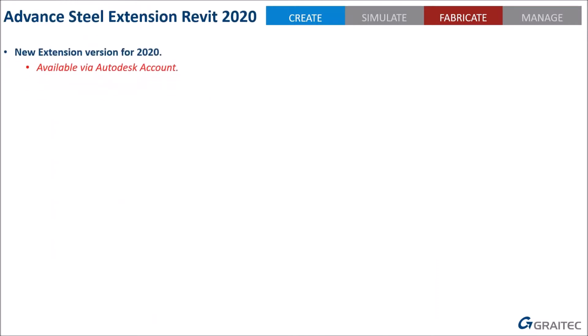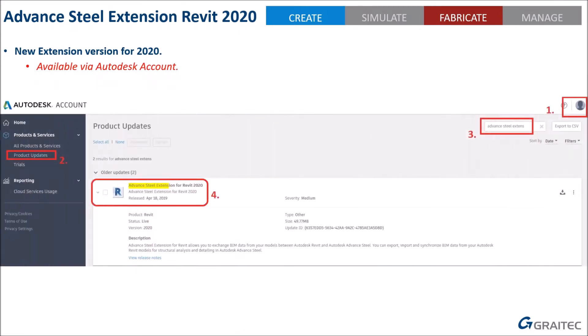In the 2020 version, you find the extension via your Autodesk account — this is the only place you'll find it now. It's not on the app store in 2020; in previous versions like 2018 it was on the Autodesk App Store for Revit, but now you need to access your account either online or through the Autodesk desktop app.